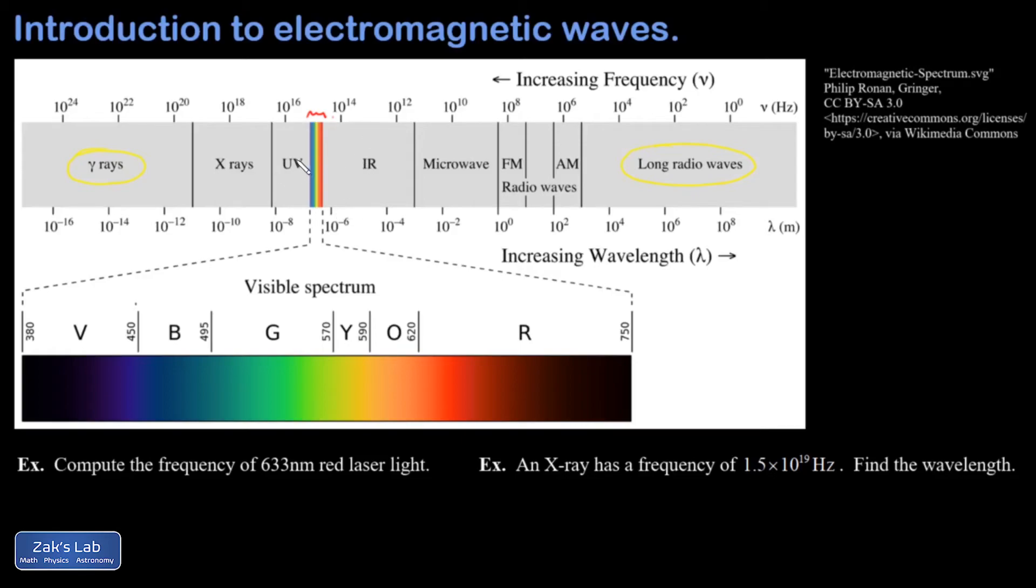On the other side of the visible spectrum, we have the infrared light. So that's light that's less energetic than red light, has longer wavelengths, and it has smaller frequencies.